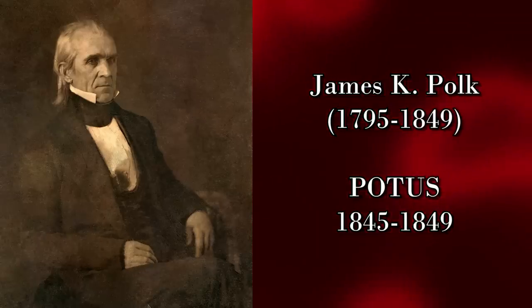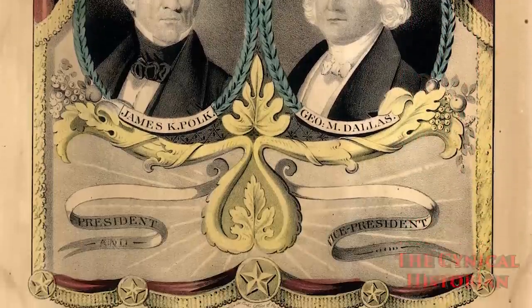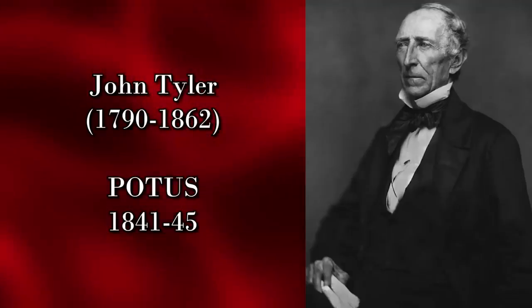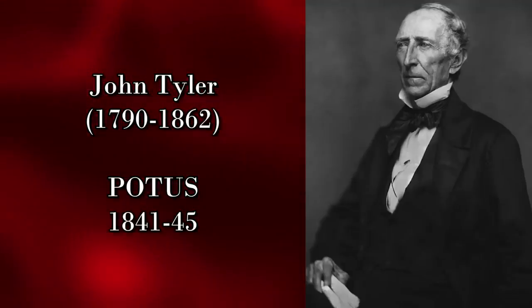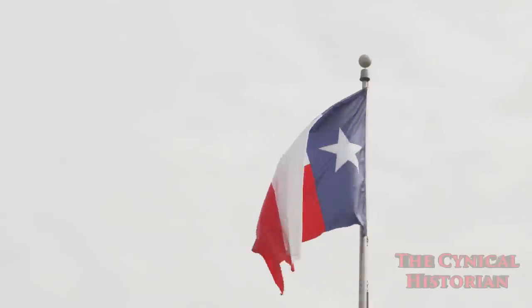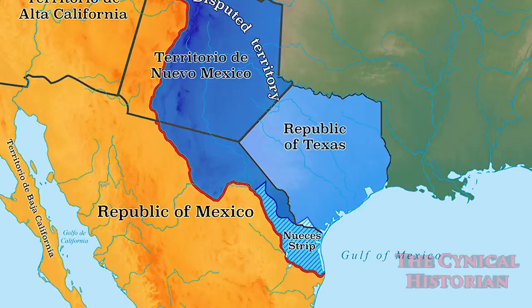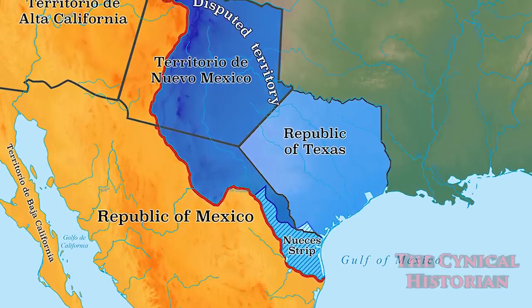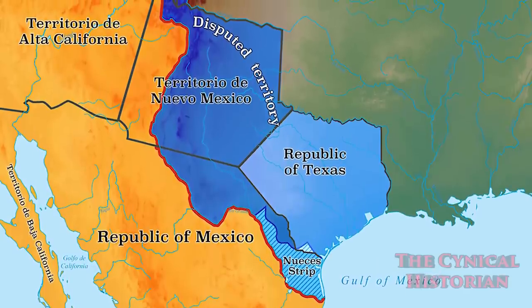James K. Polk combined the calls of Manifest Destiny into his platform, but President Tyler was way ahead of him. He concluded the negotiations for annexing Texas, and the Senate passed the annexation treaty with only a few days to spare before Polk was inaugurated. Texas was part of the Union in 1845, but Mexico disagreed. The disputed Nueces Strip was, well, disputed.